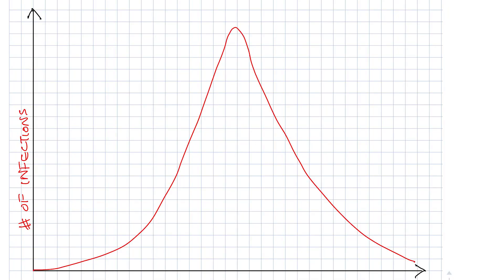Take a look at what an exponential growth curve looks like. Obviously, the curve doesn't go up forever. Eventually, the growth stops because the infection has infected all the people that it can infect, and then the curve begins to decay in an exponential manner too.